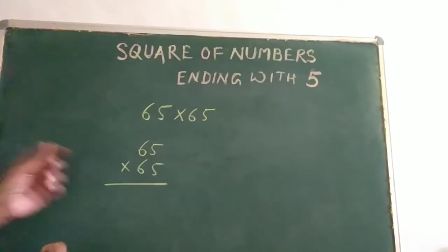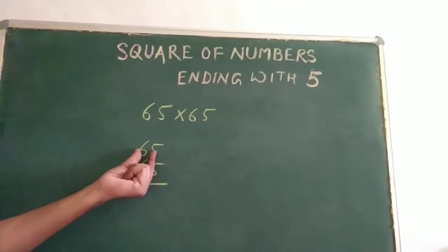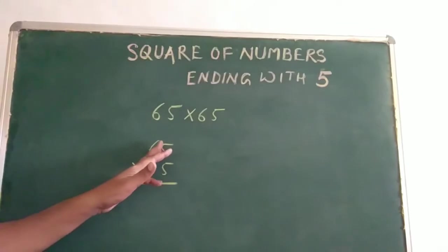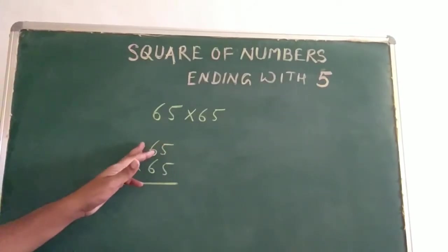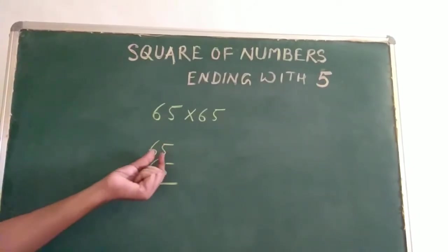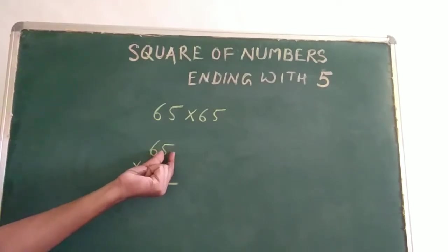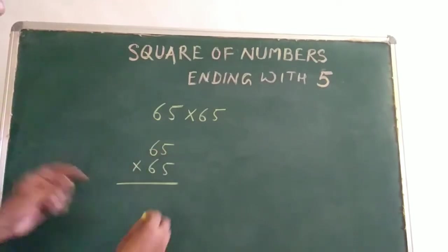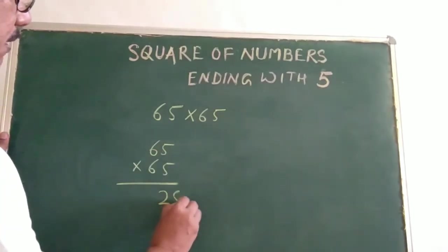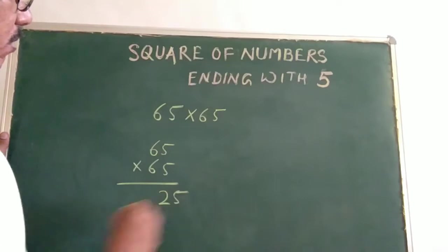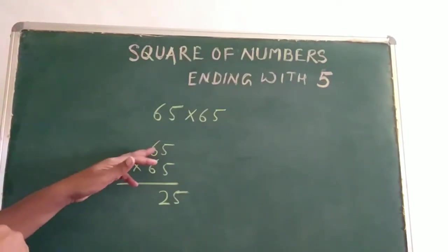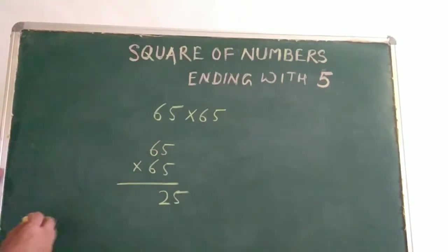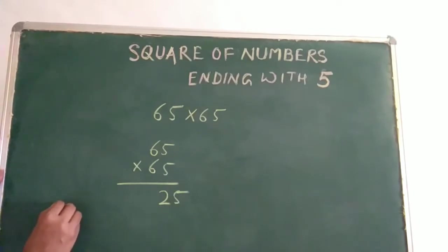Now in this number which is ending with 5 — 65 — there are two parts. The first part is 5 and the second part is 6. So first we will take the square of 5. The square of 5 is 25. Now what number is remaining here? 6. What is the next number after 6? That is 7.